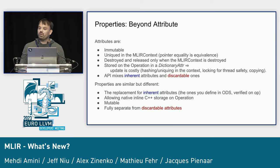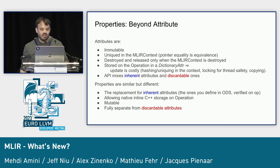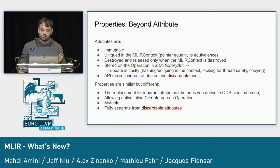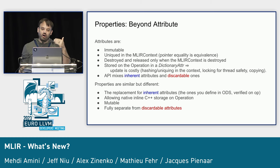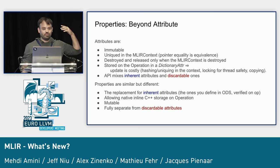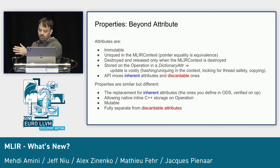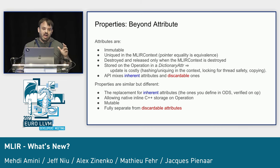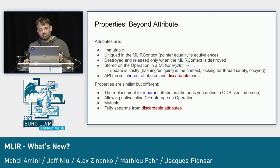On an operation, attributes are stored in a dictionary attribute, so the storage on the op is one attribute which is a dictionary. This means updating attributes on an operation is expensive — you have to materialize, hash, and unique the new value in the context, requiring locking for thread safety and potential copying. Additionally, the current API mixes inherent attributes (which are verified and expected) with discardable attributes (which are just added), and doesn't differentiate between them.